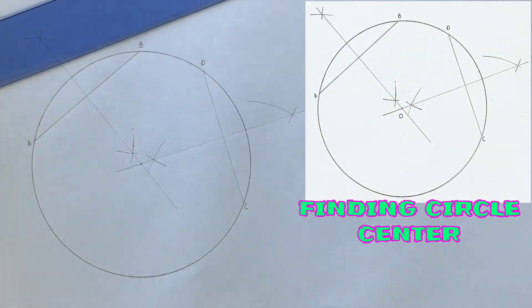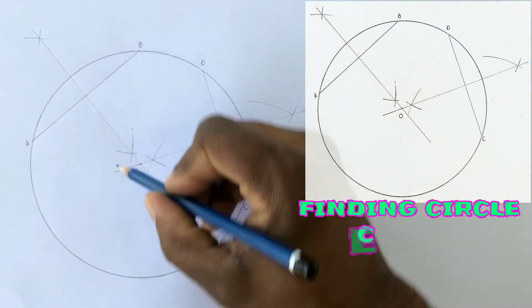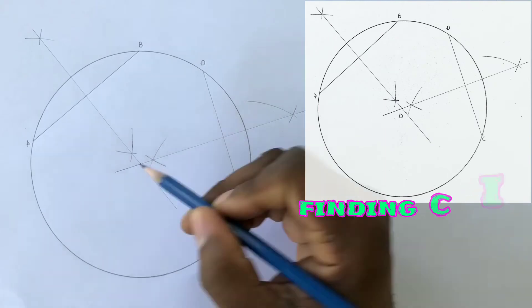Where the two lines intersect is the center of the circle. Label the center O.